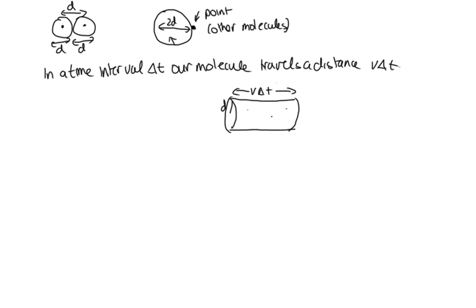And however many of these points are inside this cylinder, those are the points or the molecules that it collides with. So in this time interval delta t, the volume of that cylinder is given by pi d squared. So this has got radius r, so the area of a circle is pi r squared, which is pi d squared in this case, times the length, which is v delta t.